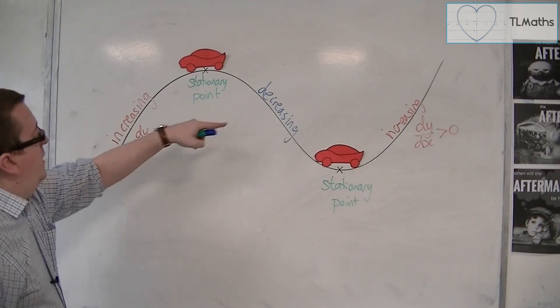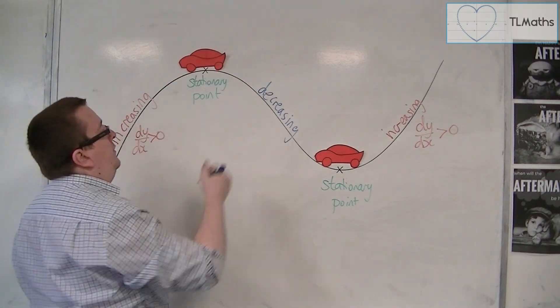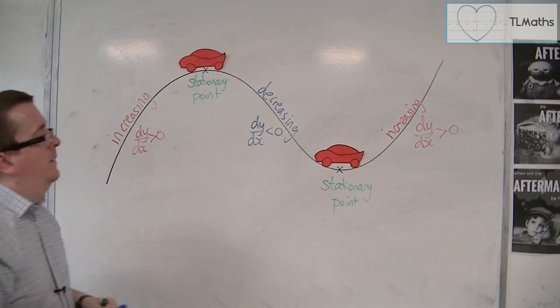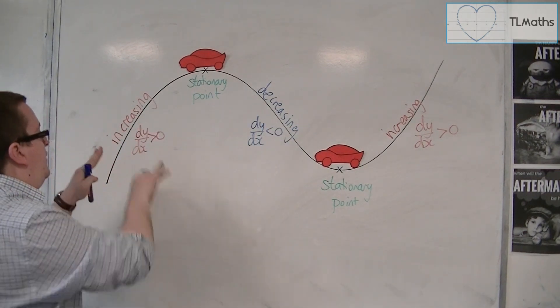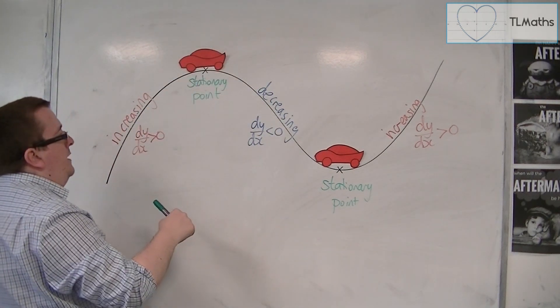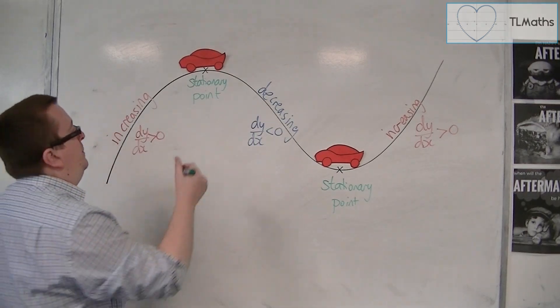Then when it's decreasing, the gradient is going downwards, and so it is decreasing. So that would be less than 0. And so, if it's going from positive to negative, then at some point, the gradient must be 0.